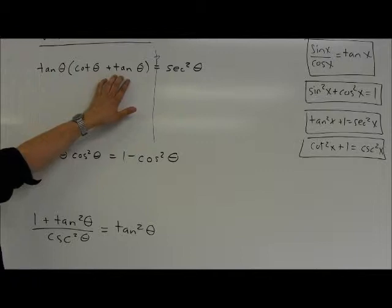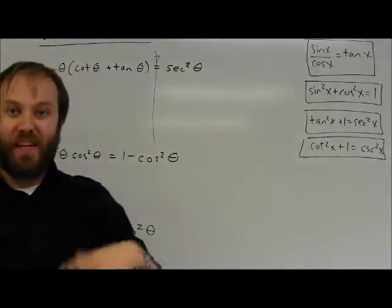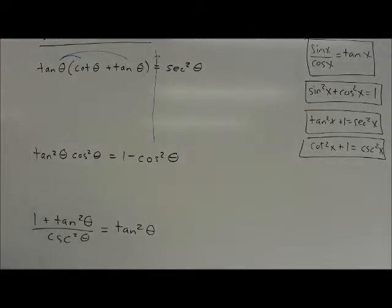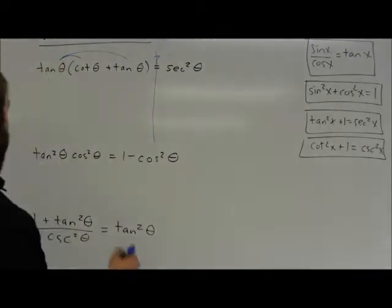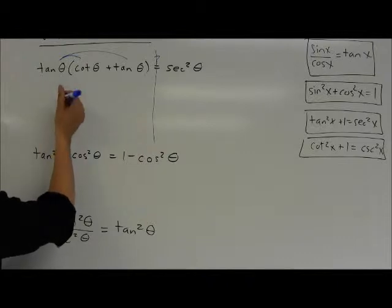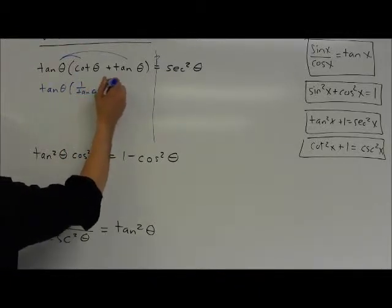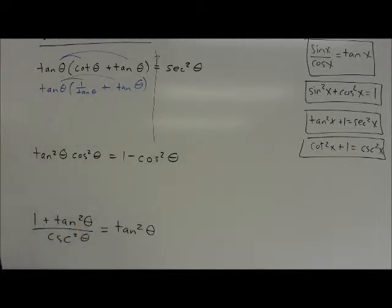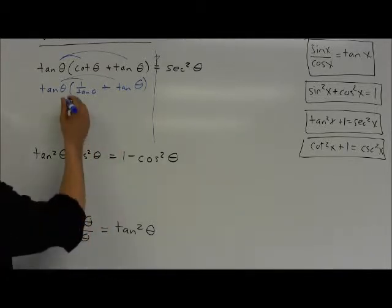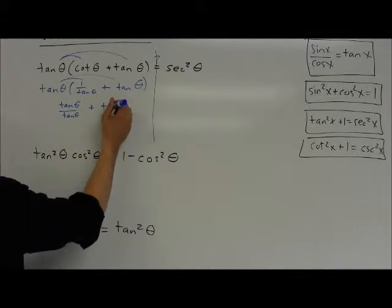First example: I need to write this in a different form so I can work it out to equal secant squared. It's not a secant squared statement right now — it has parentheses. One easy way would be to multiply it out using the distributive property. Tangent times cotangent equals 1, since cotangent is 1 over tangent. I'm going to replace cotangent with 1 over tangent of theta, then distribute: tangent times 1 over tangent gives tangent over tangent, plus tangent squared theta.